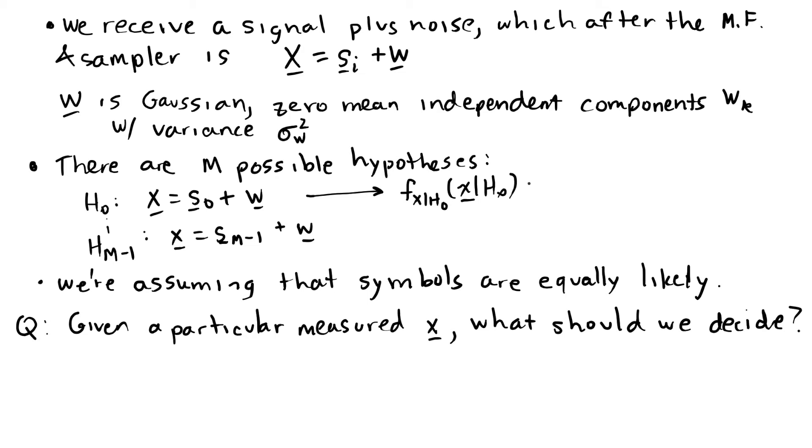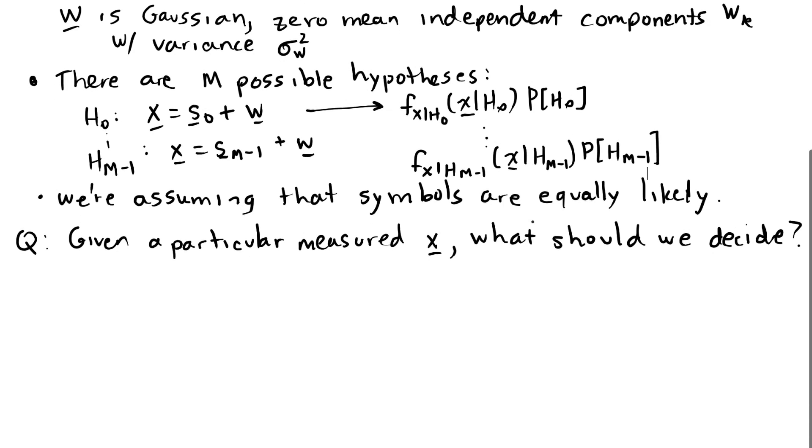Down to the last one, which would be the probability density function of x given H of M minus one times the probability of H of M minus one. And the symbol decision is the one that maximizes this probability.